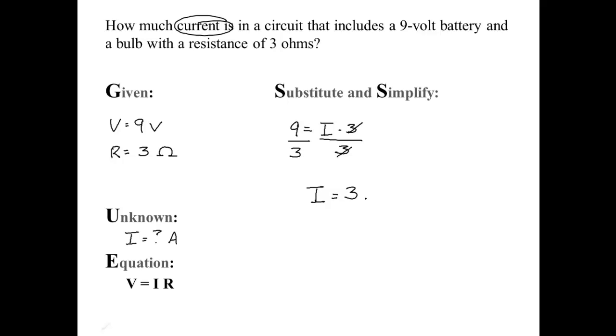Current equals 3 rhinoceroses. Marshmallows, amps. I'll circle that to denote that that's the correct answer.